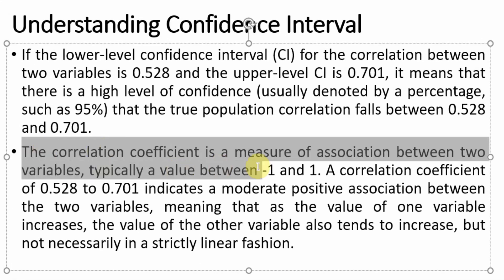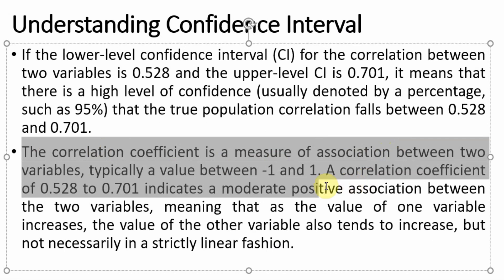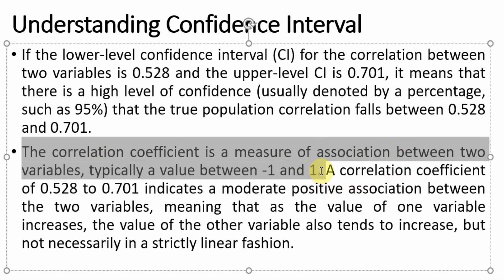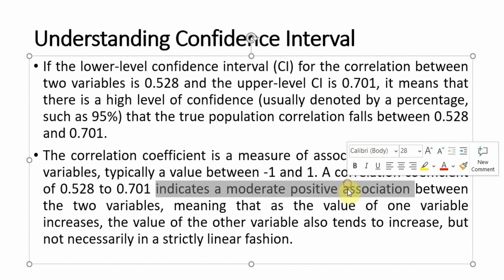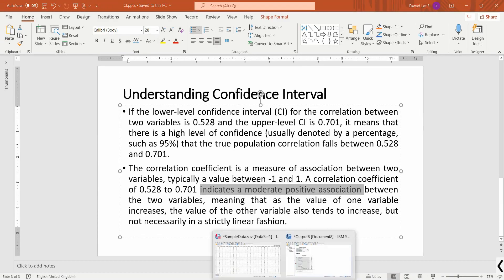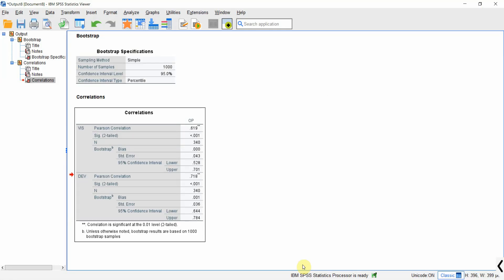The correlation coefficient is a measure of association and values range between -1 to 1, where a negative sign indicates a negative relationship and no sign or a positive sign indicates a positive relationship. In this case it is moderately positive. This is how you can interpret the confidence interval when running correlation analysis.